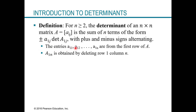Remember, entries are denoted with subscripts. So A sub 1,1 means the entry in the first row and first column. A sub 1,2 means the entry in the first row but second column, and so on to the nth column. Capital A sub 1,N is a new matrix obtained by deleting row one and column N. So you take the entries as coefficients, make smaller matrices, and find the determinants of those.